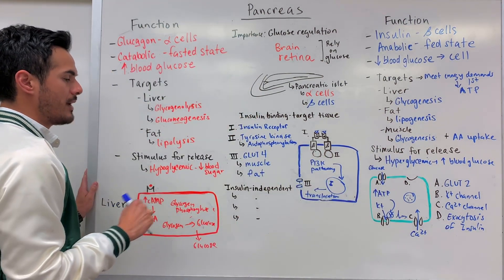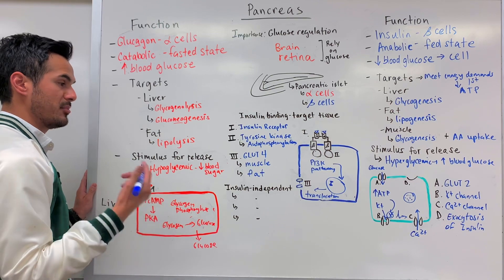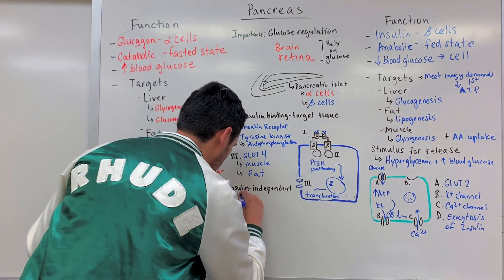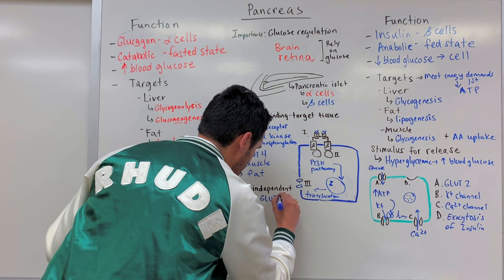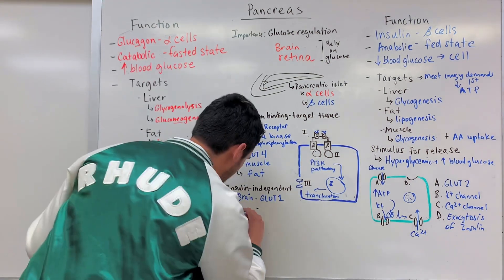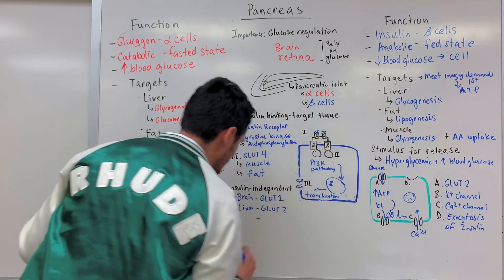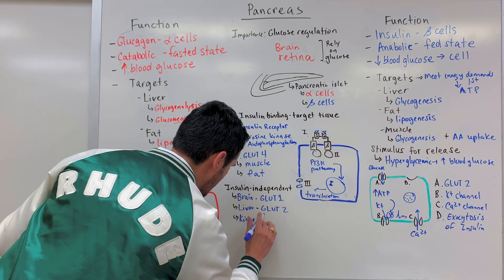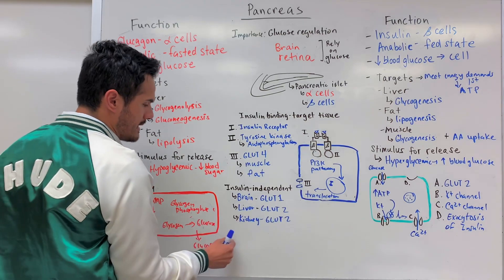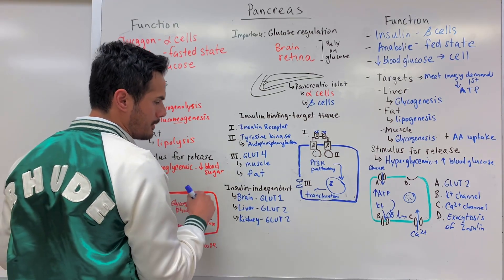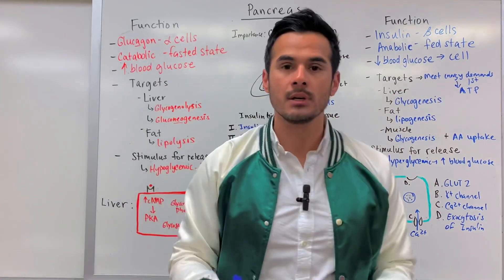Some tissues don't require insulin and are insulin-independent. Within the brain, the specific transporter is GLUT1. Within the liver and kidney, the transporter is GLUT2. If it's GLUT2, that means it does not require insulin in order for the uptake of glucose. And that's going to do it for this lecture.